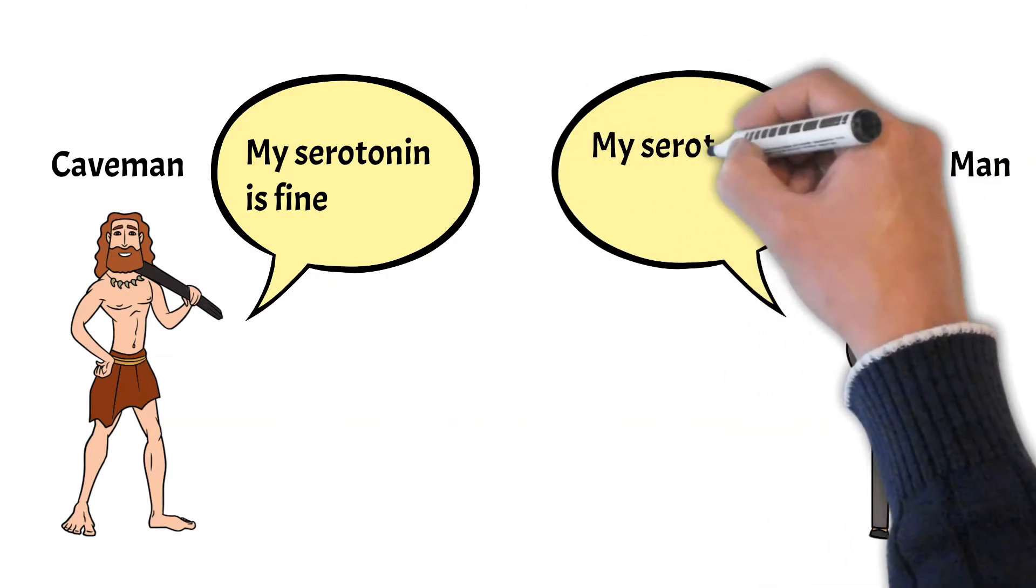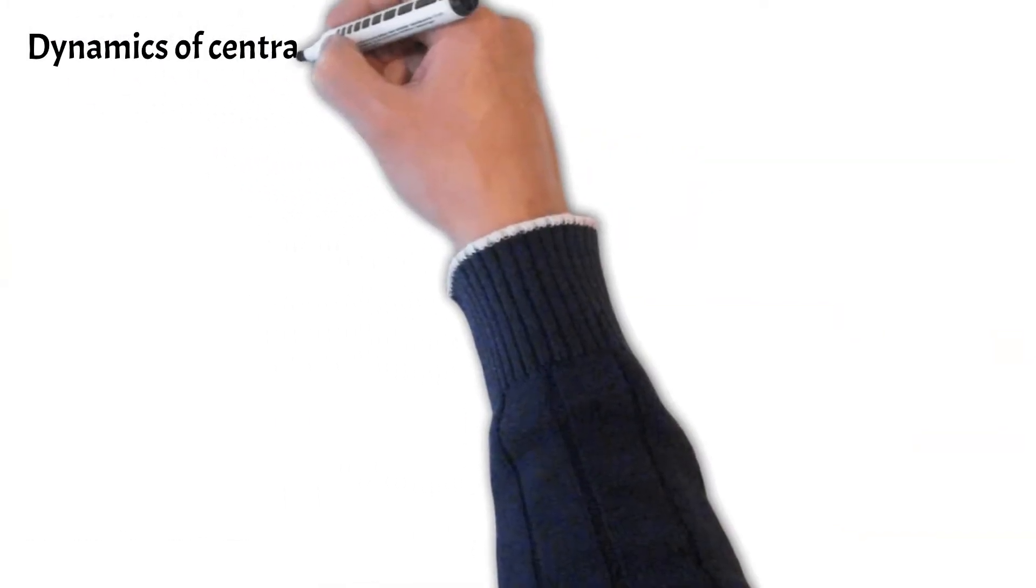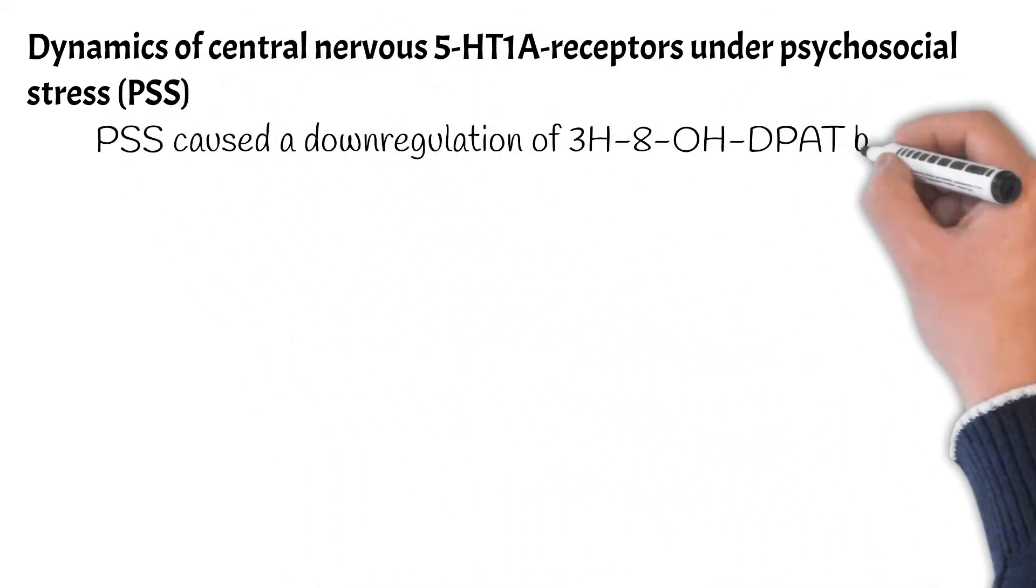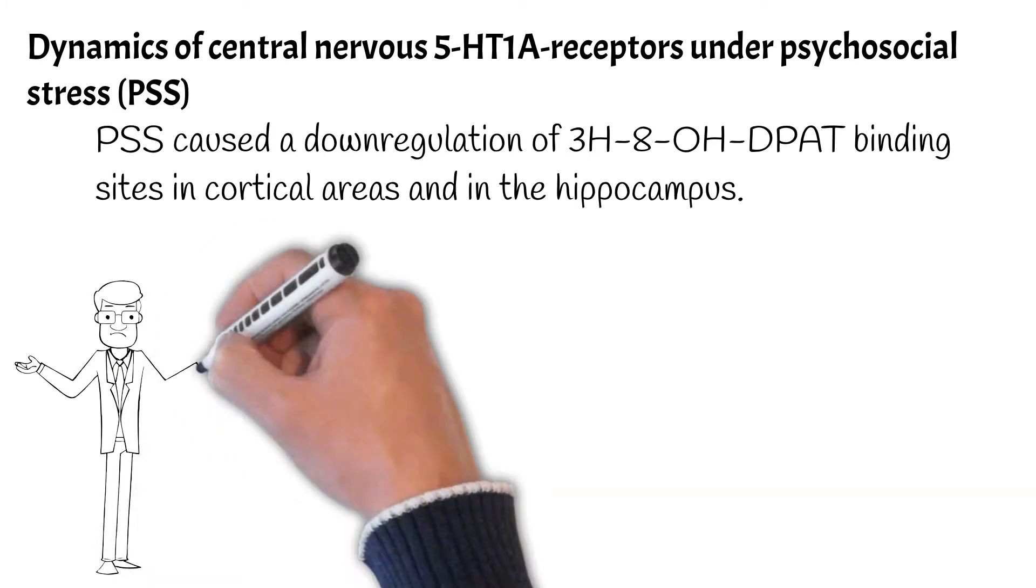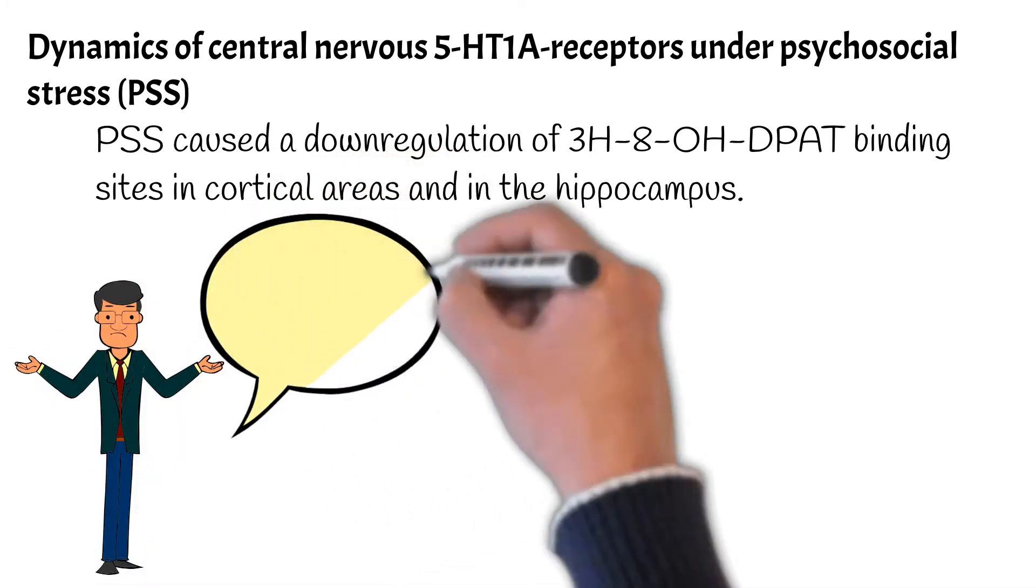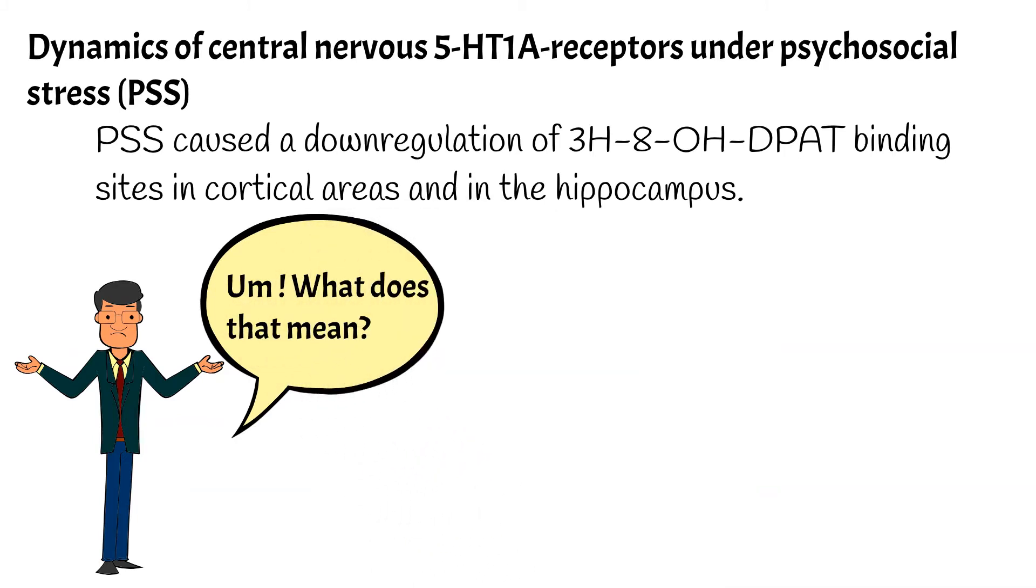That question led me to finding this paper. Dynamics of Central Nervous 5-HT1 Receptors Under Psychological Stress, or PSS. This paper said PSS caused a downregulation of 3H8OHDPAT binding sites in cortical areas and in the hippocampus. Wow. What on earth does that mean?